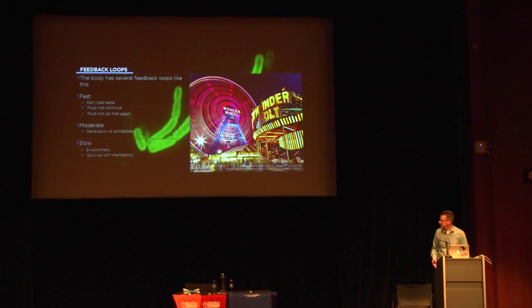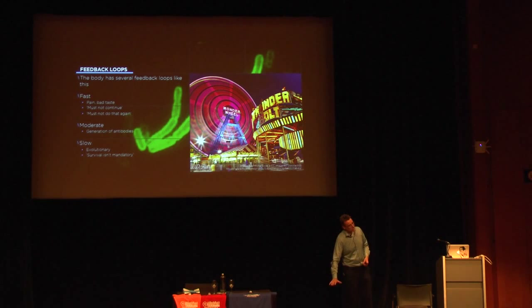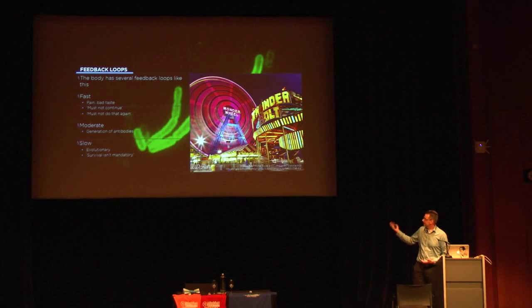The body is full of feedback loops. There's pain — a signal that the cactus you're leaning on is probably not a good idea. There's bad taste — what you're about to eat is not good for you. Then there's a medium-loop like the creation of antibodies, and a long loop — the evolutionary loop. As Josh likes to say, survival isn't mandatory; every now and then somebody dies and we learn from their mistakes.